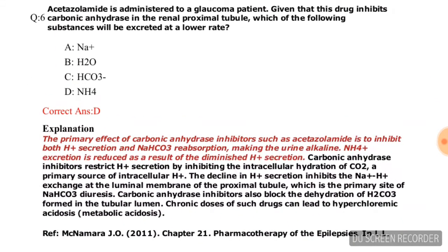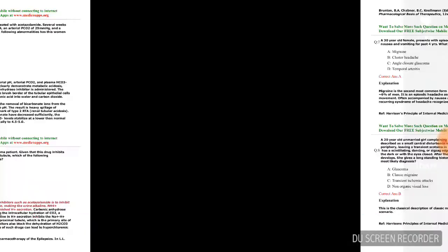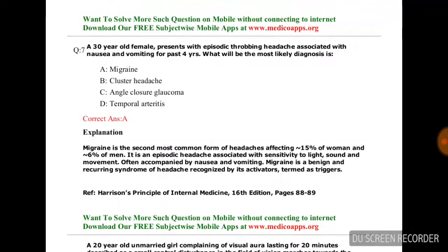Question number six: Acetazolamide is administered to a glaucoma patient. Given that this drug inhibits carbonic anhydrase in the renal proximal tubule, which of the following substances will be excreted at a lower rate? Options are Na+, HCO3−, NH4+. The correct answer is NH4+ (ammonia).